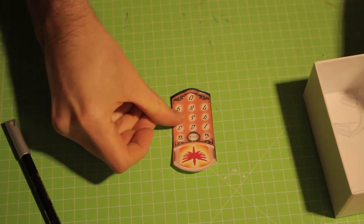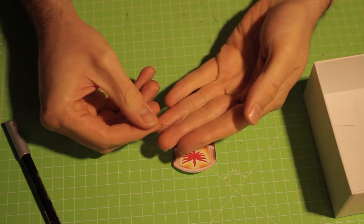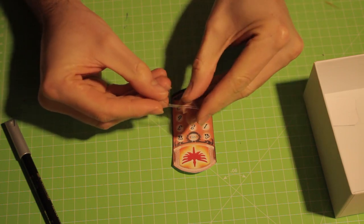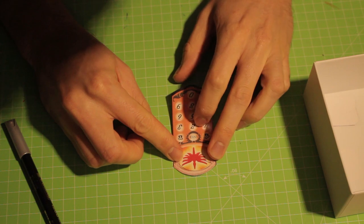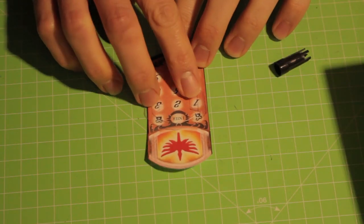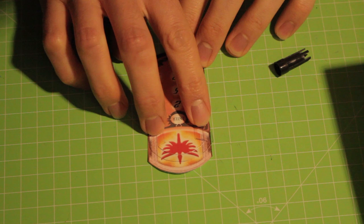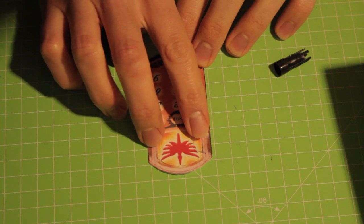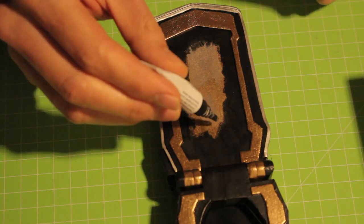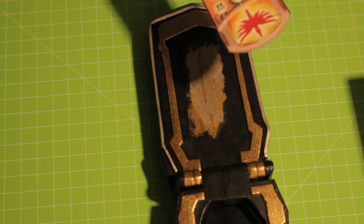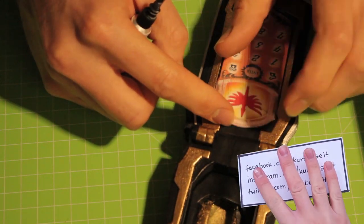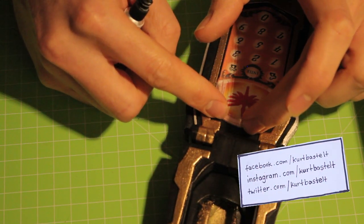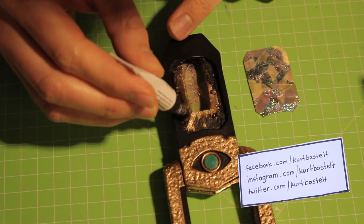I printed out the phone keypad and added this transparent element to it. This is where you can slide in the different ranger symbols. Now add the holographic mirror to your morpher and your morpher is complete.